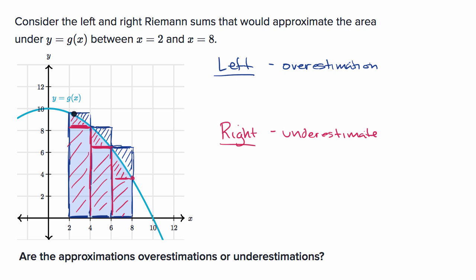And once again, that is because this is a strictly decreasing function. So if you use the right endpoint of any of these subdivisions to define the height, that right value of g is going to be the lowest value of g in that subdivision. So it's going to be a lower height than the average height of the value of the function over that interval, so you're going to have an underestimate in this situation.